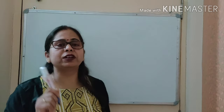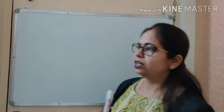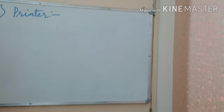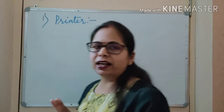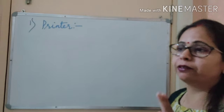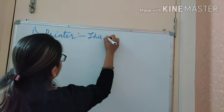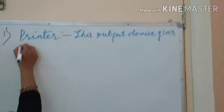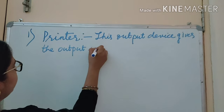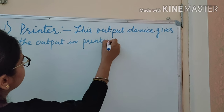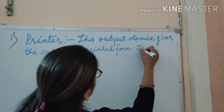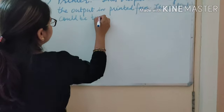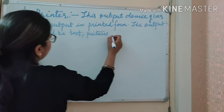The first output device that we will discuss is the printer. The device which is useful for printing — this is a kind of output device which gives the output in a printed form. This output device gives the output in a printed form, and the output could be text, pictures, and graphics.